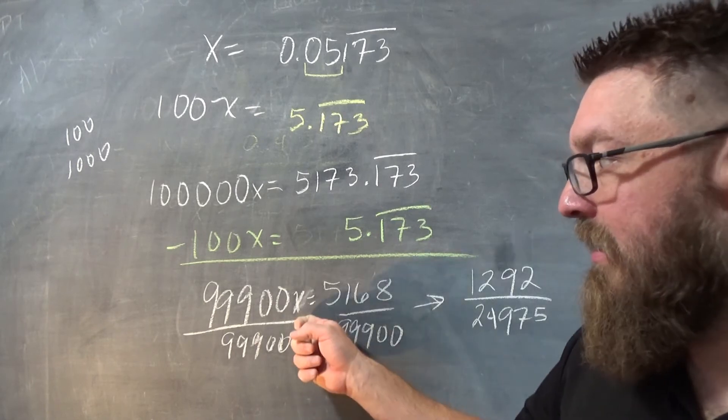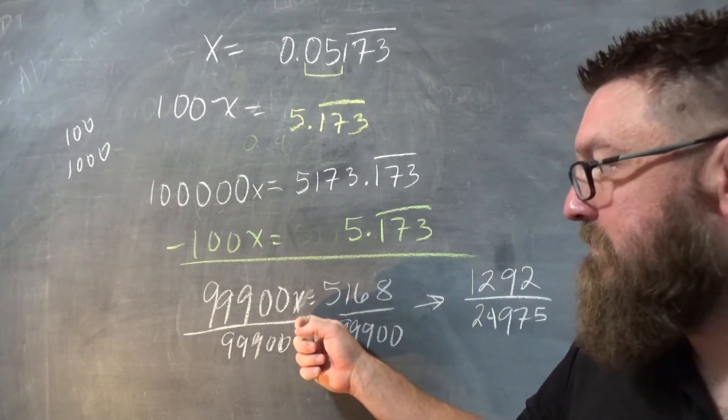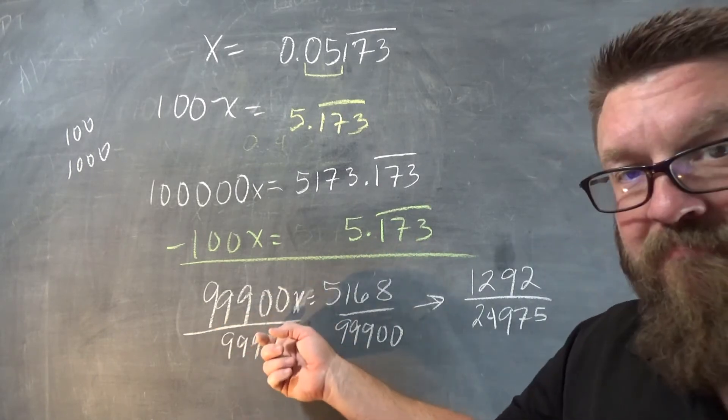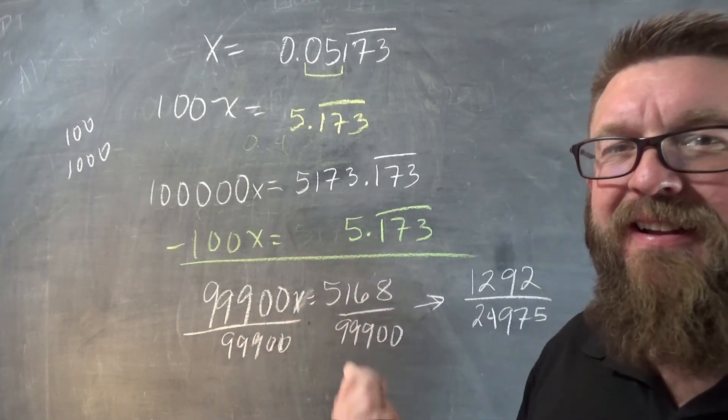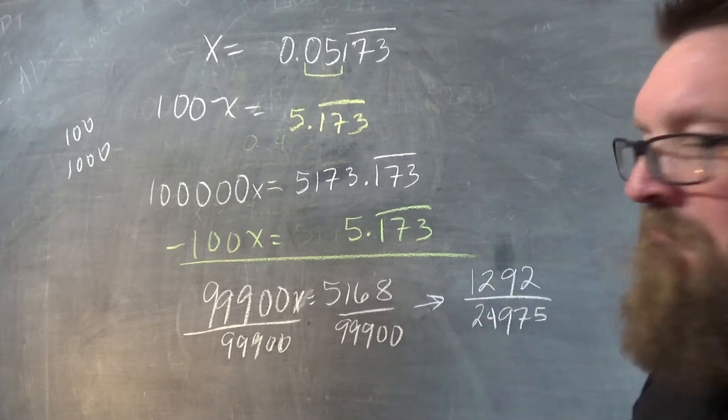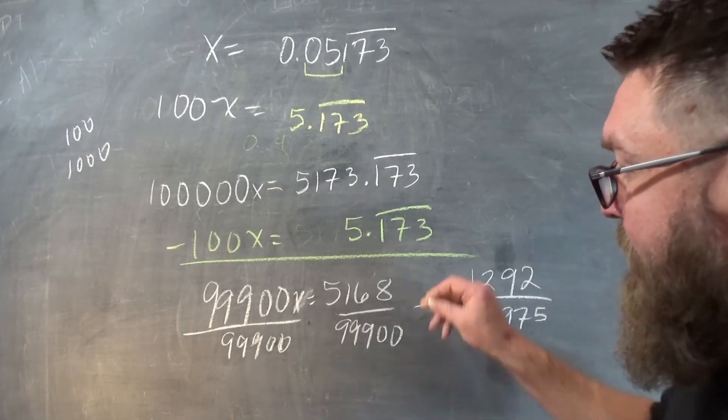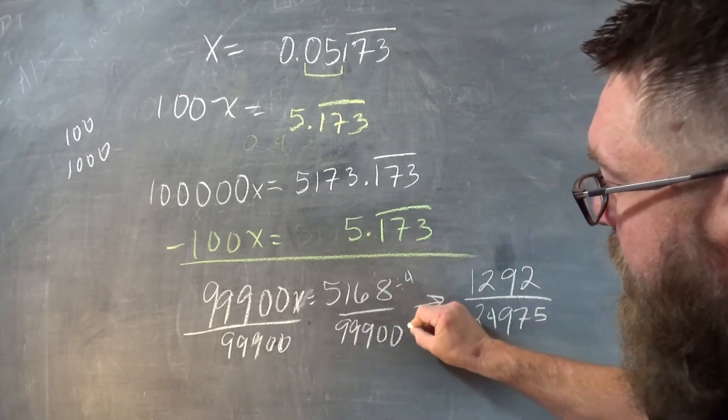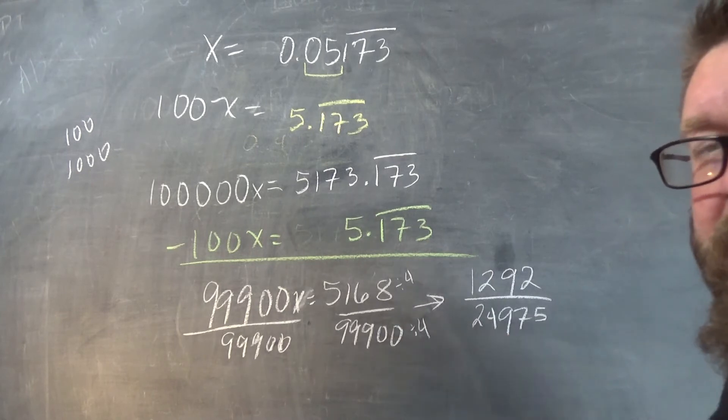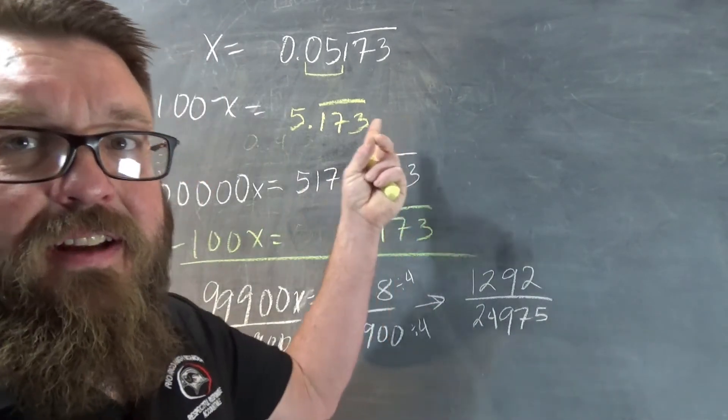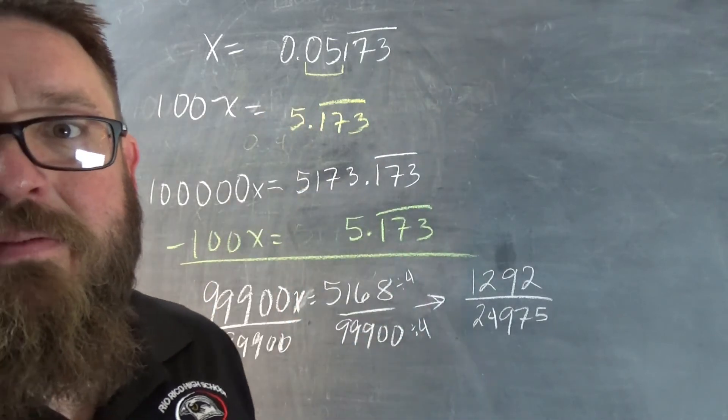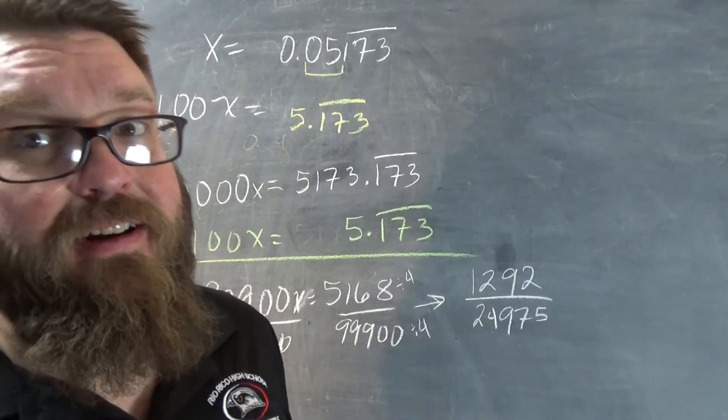Divide both sides by 99,900. And you get that. That right there is the fraction whose decimal approximation is 0.05173, and the 173 is repeating.